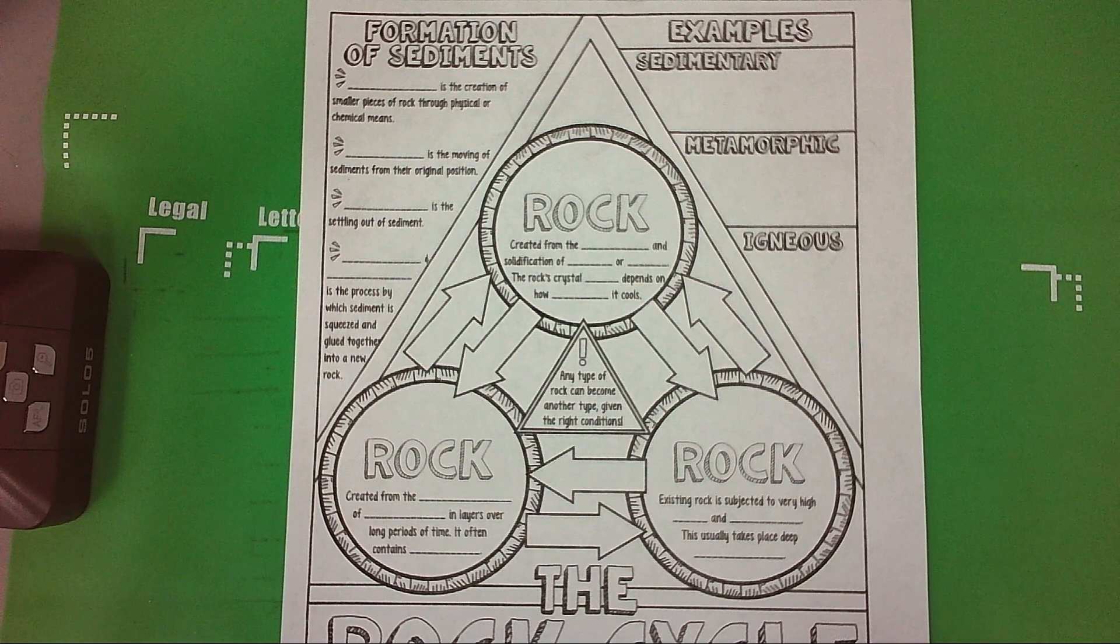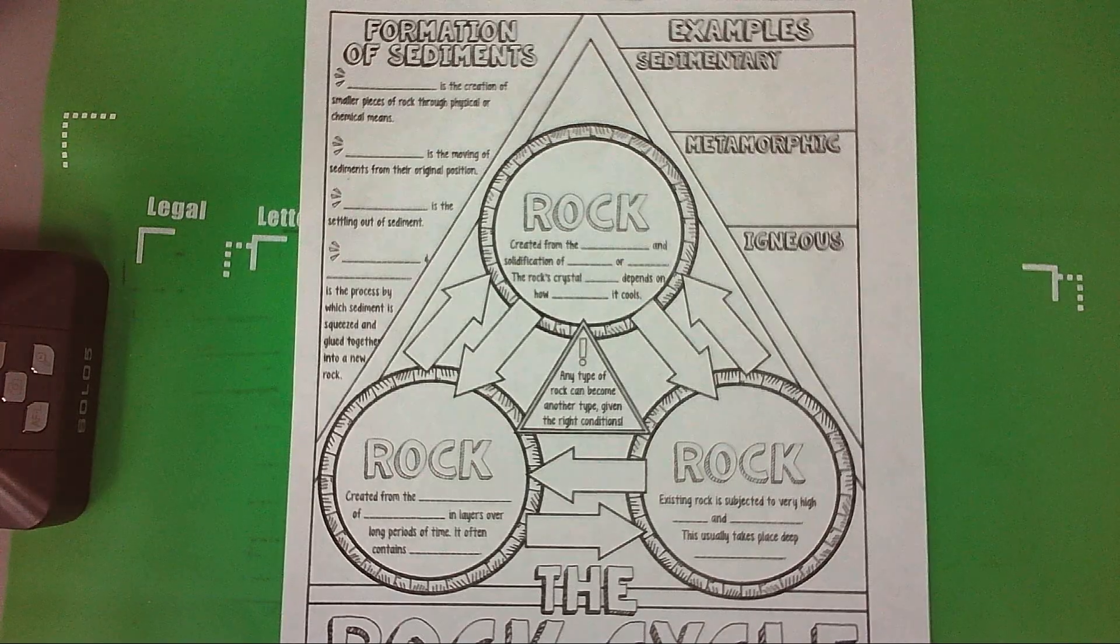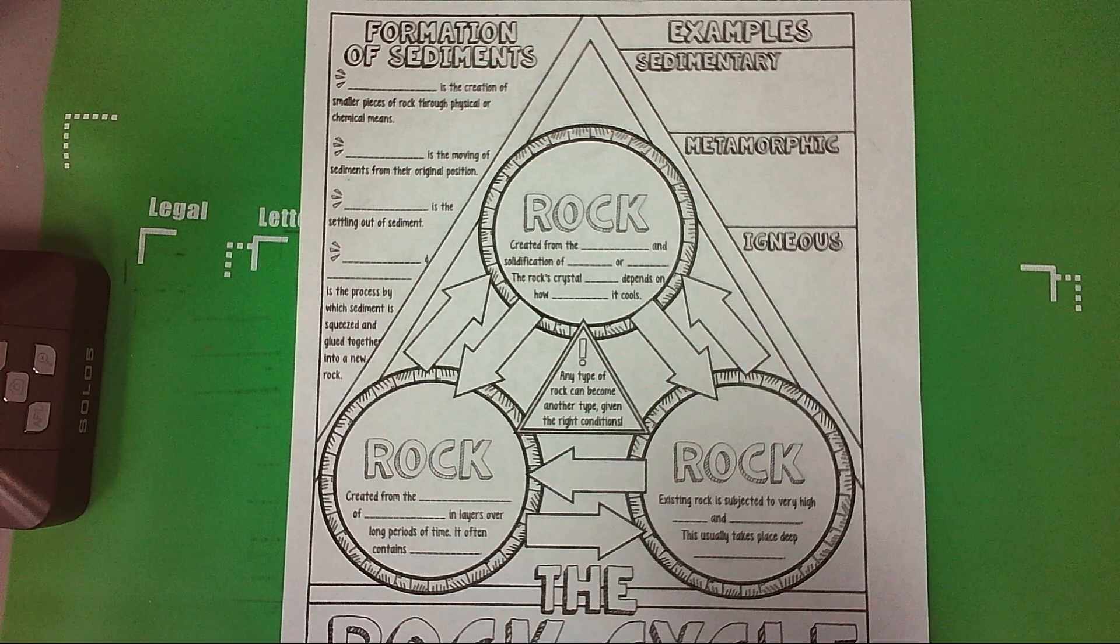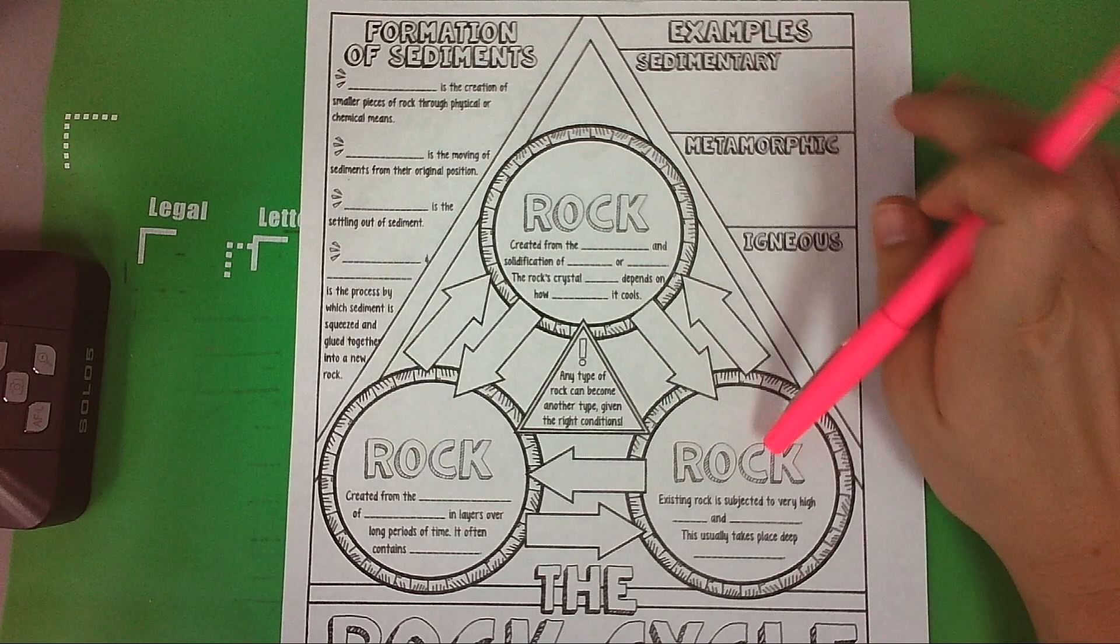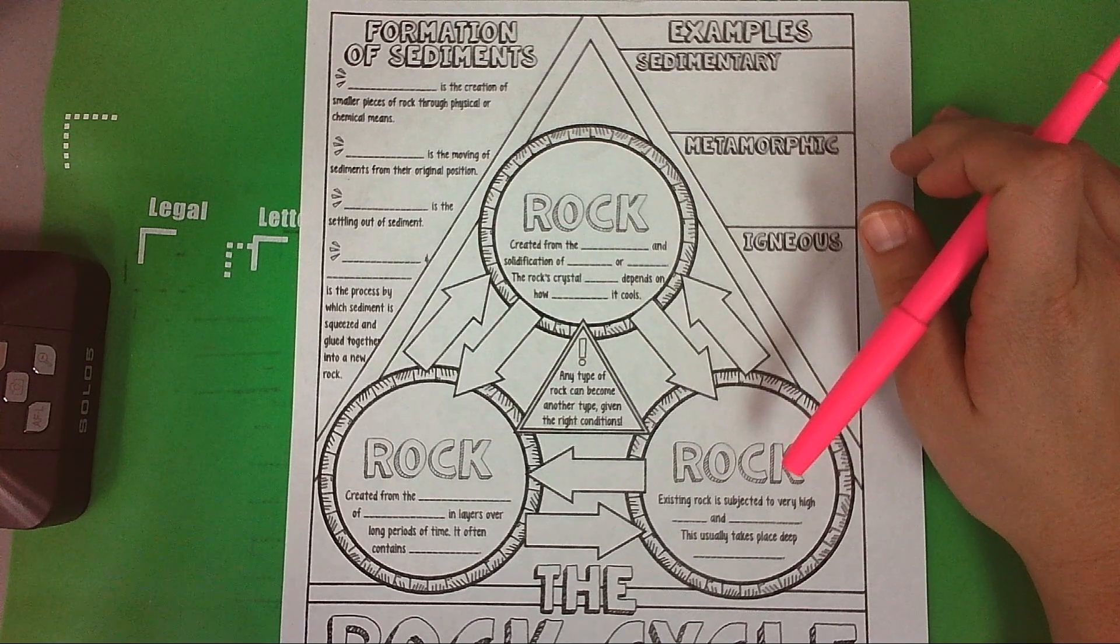Alright, these are your rock cycle doodle notes. They're going to go in your notebook as number 14, so make sure you have this worksheet. It's at the station, if not it's in a folder in the back.